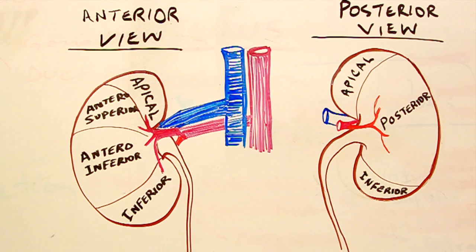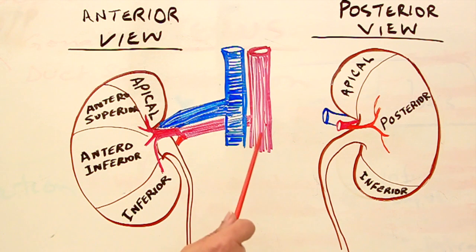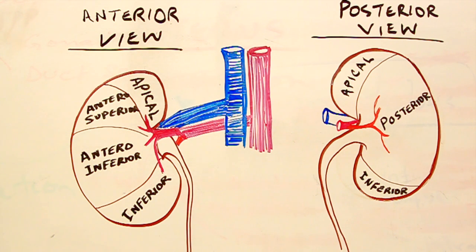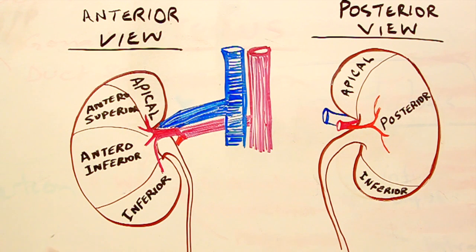Under normal circumstances, at a resting condition, the large renal arteries deliver approximately one-fourth of the systemic cardiac output — that means roughly up to 1,200 milliliters of blood to the kidneys per minute.